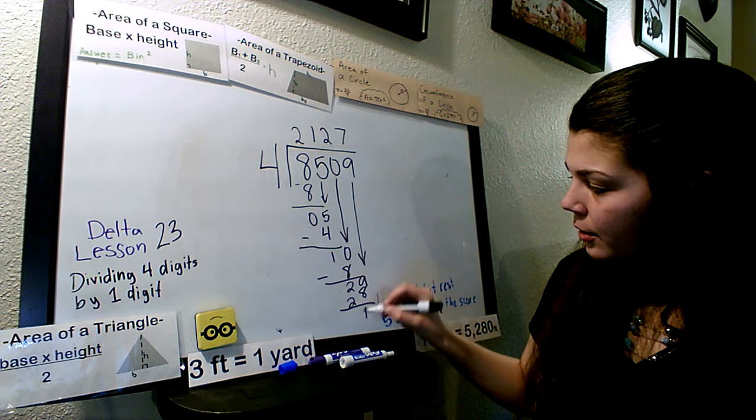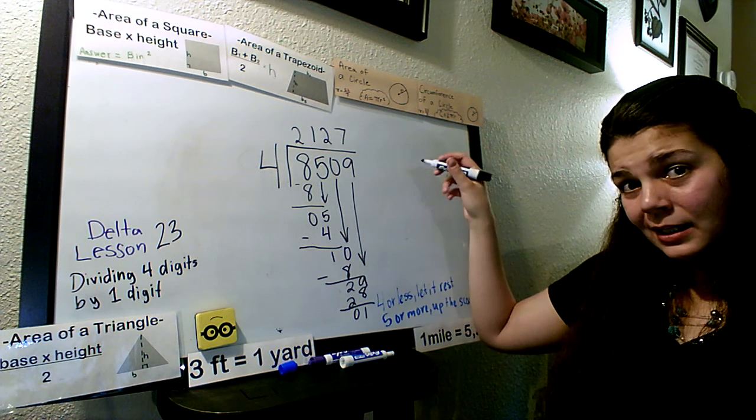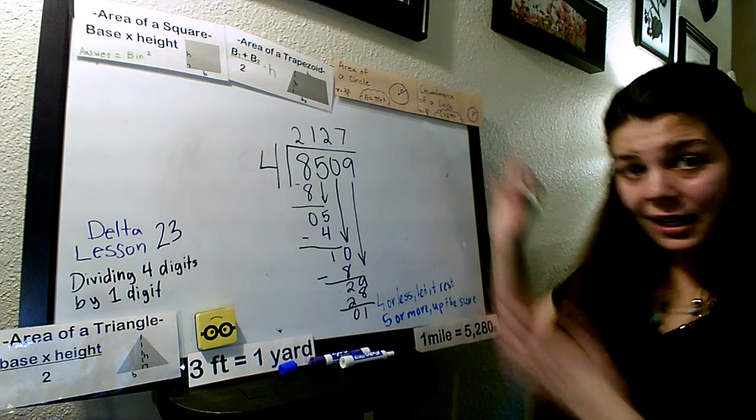Okay. 9 minus 8 is 1. 2 minus 2 is 0. Do I have anything else to drop down? No, I don't. No, I don't. That means I'm done, right? Is that our answer?